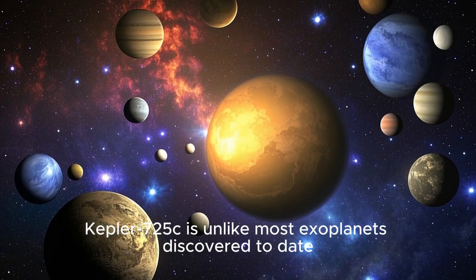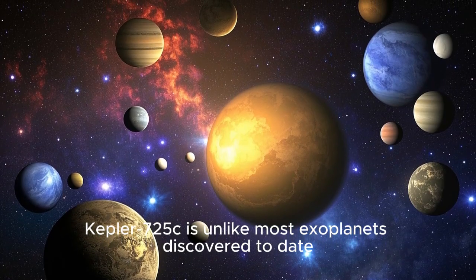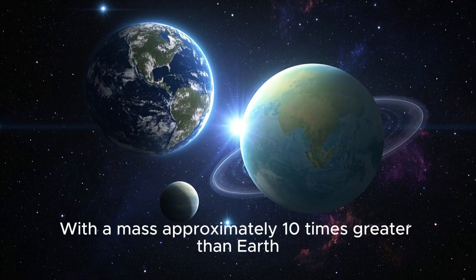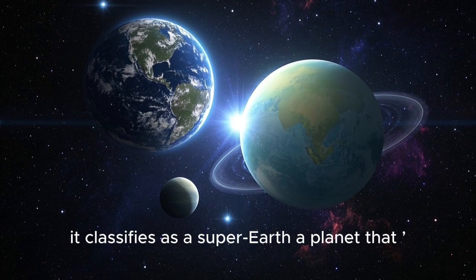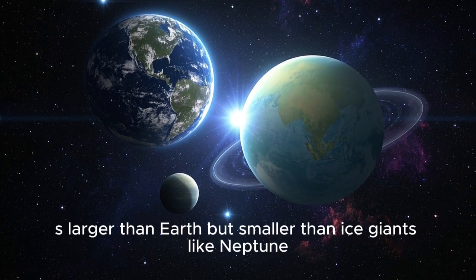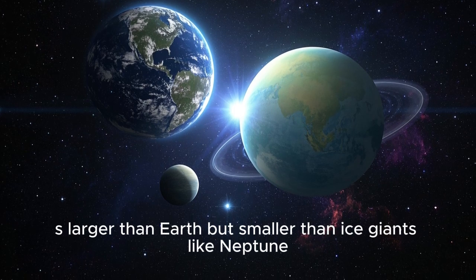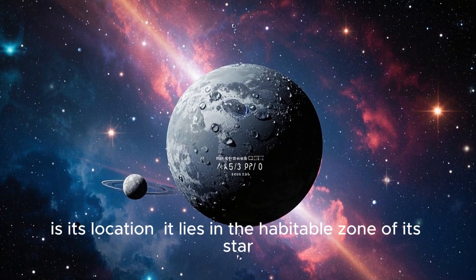Kepler-725c is unlike most exoplanets discovered to date. With a mass approximately 10 times greater than Earth, it classifies as a super-Earth, a planet that's larger than Earth but smaller than ice giants like Neptune. Its defining trait, however, is its location.